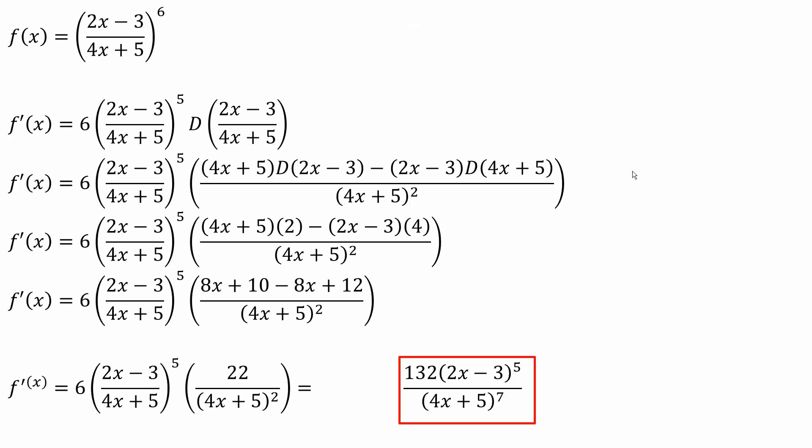We are essentially doing the chain rule first. We're taking the derivative of the outside function. The 6 comes to the front, and you do 6 minus 1 to get 5. Then you keep the inside piece. Now you will take the derivative of the inside piece.